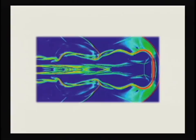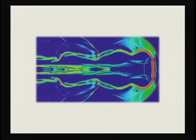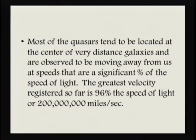If particles are coming out from the centers of galaxies traveling at the speed of light, we've got to figure out exactly why. When we look back at those big globs coming out on either side, they're certainly not unique — and we know those things are coming out at extremely high speeds. Most quasars tend to be located at the centers of really distant galaxies, and they appear to be moving away from us at a significant percentage of the speed of light. The greatest velocity registered so far is about 96 percent the speed of light.